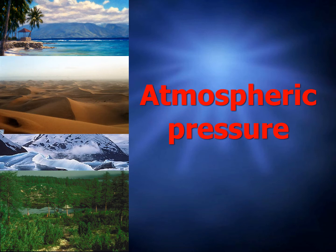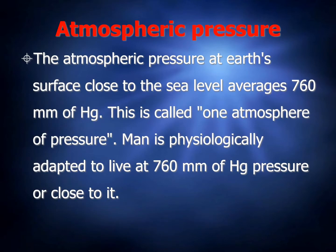Today's topic is atmospheric pressure. The atmospheric pressure at Earth's surface, close to sea level, averages 760 mm of mercury. This is called one atmospheric pressure. Man is physiologically adapted to live at 760 mm of Hg pressure or close to it.